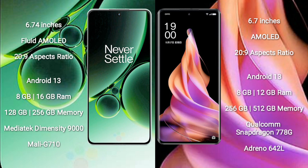OnePlus Nord 3 comes with 8GB or 16GB RAM and 128GB or 256GB internal storage, powered by a MediaTek Dimensity 9000 processor and Mali-G710 GPU.